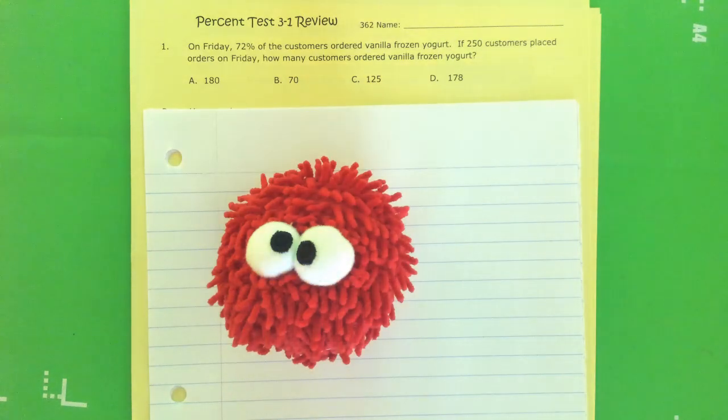Hey Spartans, we're going to go over the percent test 3-1 review. Here goes number one. On Friday, 72% of the customers ordered vanilla frozen yogurt. If 250 customers placed orders on Friday, how many customers ordered vanilla frozen yogurt?